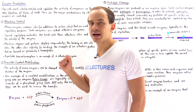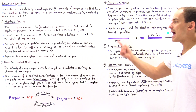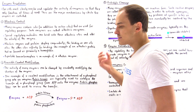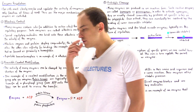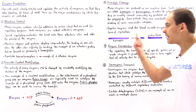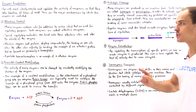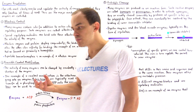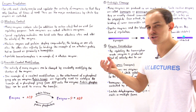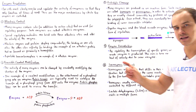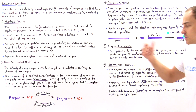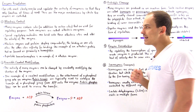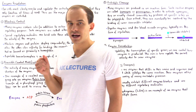The fourth mechanism of regulation involves controlling the amount of enzyme present in the cell. This type of regulation is typically monitored at the level of transcription. By controlling the amount of transcription that takes place on a particular gene that codes for a specific enzyme, we can ultimately control how much of that enzyme is produced inside the cell, and in turn control the activity and functionality level of that enzyme.